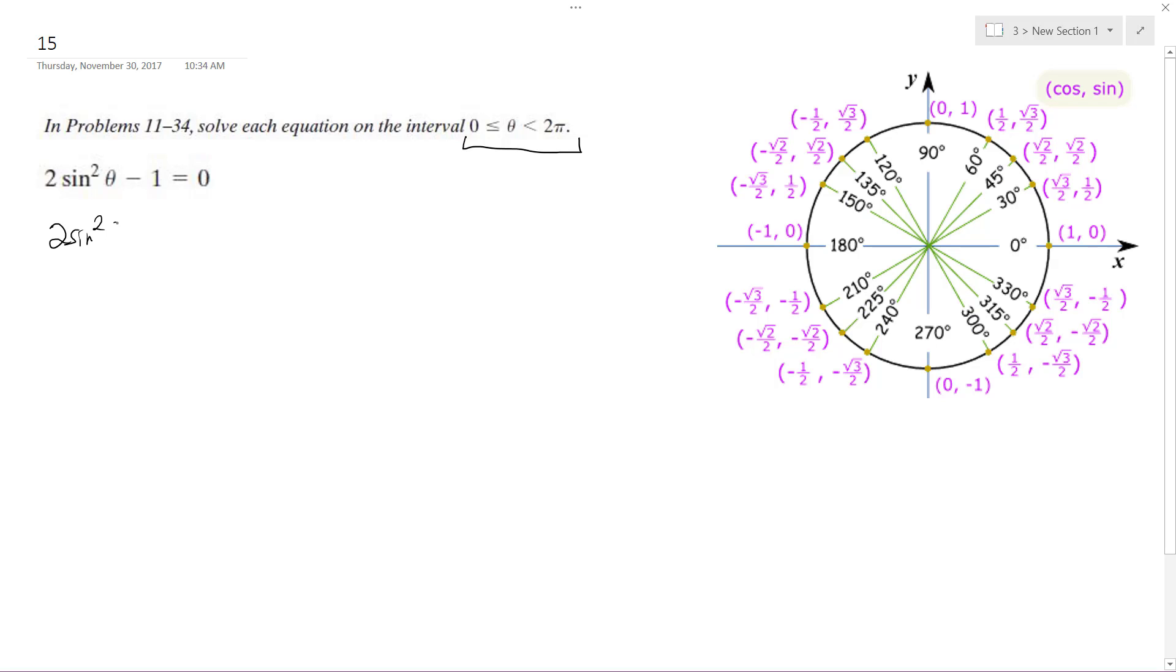So I get 2 sine squared theta is equal to 1, then divide by 2. I get sine squared theta is equal to 1 half, and then take the square root of both sides. I get sine of theta is equal to plus or minus 1 over the square root of 2.